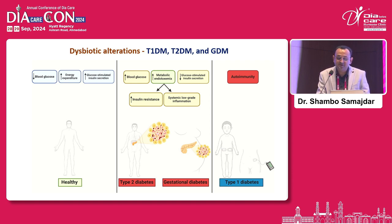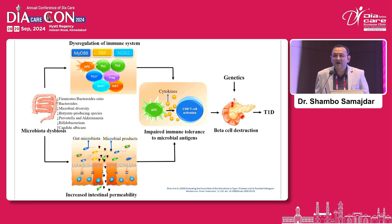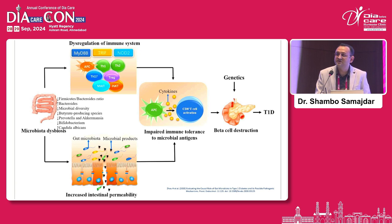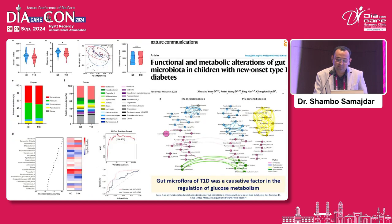These changes can evoke autoimmunity leading to Type 1 diabetes, and also cause derangement in metabolic parameters leading to Type 2 and even gestational diabetes. In Type 1 diabetes, gut microbiota dysbiosis causes immune system dysregulation — the handshake between antigen-presenting cells and T cells results in disordered cytokine production. Dysbiosis also leads to leaky gut syndrome, which further predisposes to Type 1 diabetes.